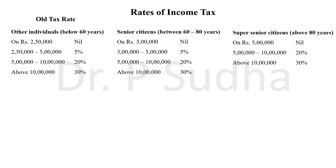As per the old tax rate, we are classifying an individual into three categories based on his age. If the individual is less than 60 years, he will be an 'other individual.' If his age is between 60 to 80 years, he is a senior citizen, and if his age is above 80 years, he is a super senior citizen. For an other individual below 60 years: up to 2,50,000 the tax is nil; between 2,50,000 to 5,00,000 he will pay 5%; between 5,00,000 to 10,00,000 he will pay 20%; and above 10,00,000 he will pay 30%.